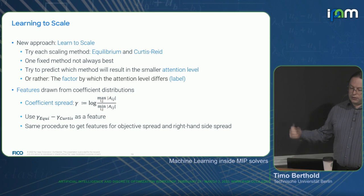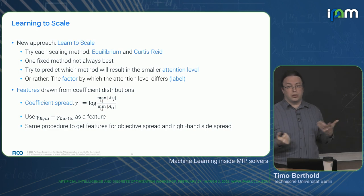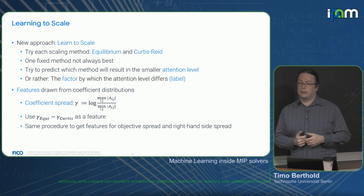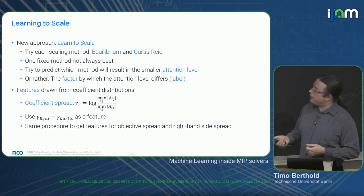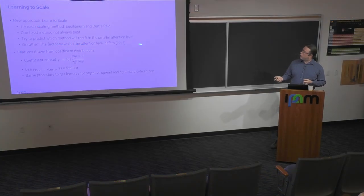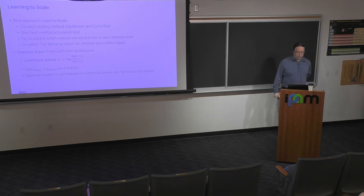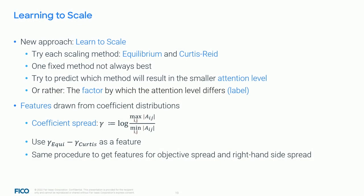What we want to do is learn which of the two scaling methods to use. We saw an example where Curtis-Reid scaling is better, but this is not always the case — there are also quite a few cases where equilibrium scaling is better, and it is the faster method. We're not trying to predict overall run time, but which one leads to the smaller attention level. What we predict is the factor between the attention levels of those two procedures.